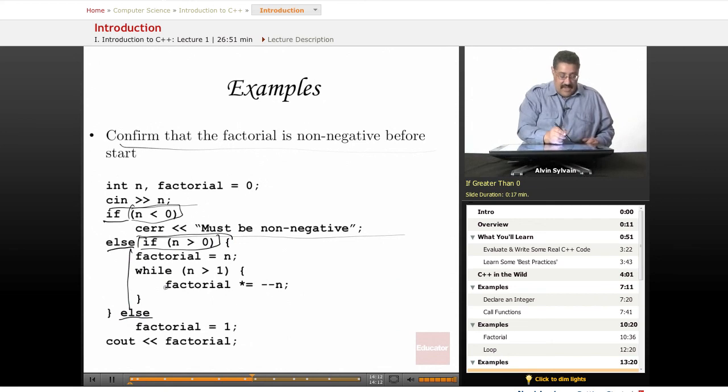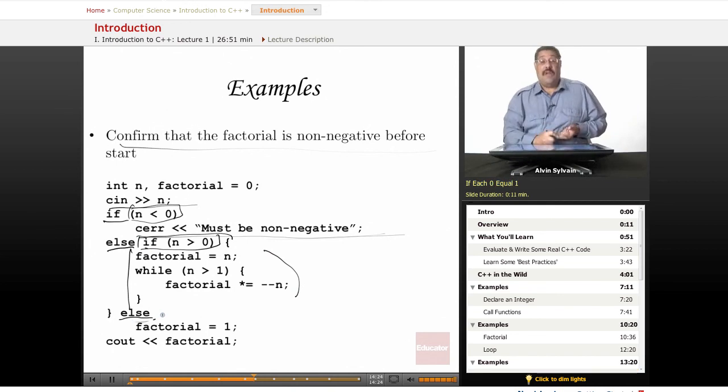Now we have one final else to this if. So if it's less than 0, we print out an error message. If it's greater than 0, we do our arithmetic. Otherwise, it's equal to 0. And the definition of 0 factorial is 1. So we just set it to 1 and then print it out.